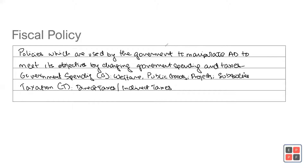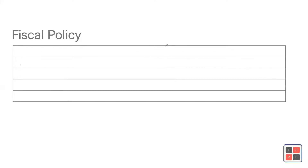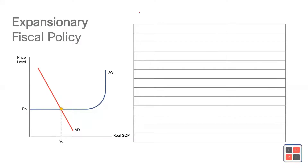Let's move on to the types of policies. There are two types: expansionary and contractionary fiscal policy. Expansionary fiscal policy is a policy which increases aggregate demand. In an expansionary fiscal policy, the government is going to increase the level of government spending and reduce taxation, which is going to increase aggregate demand.